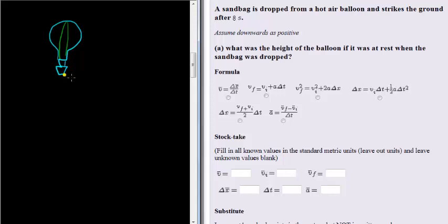At some point when it drops the sandbag, what was the height of the balloon if it was at rest when the sandbag was dropped means that the air balloon was not moving itself, so its initial velocity was zero. Then all the way to the earth this sandbag drops, and eventually when it gets to earth this whole journey takes a total of eight seconds.